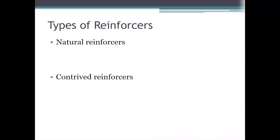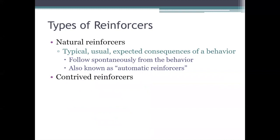In addition to the primary versus secondary distinction, another distinction we make when it comes to reinforcers is between natural ones and contrived ones. Natural reinforcers get their name from the fact that they naturally follow a particular behavior — they follow it automatically, as a natural consequence of the behavior, so no one has to set these consequences up or make special arrangements. For example, when I mow my lawn, the smell of freshly cut grass and the look of a neat manicured lawn are natural reinforcers because they automatically and naturally follow that behavior of mowing the lawn.